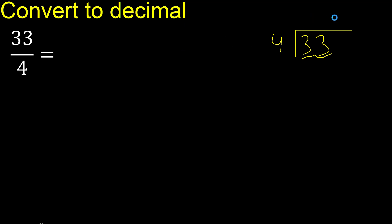4 multiplied by 8 is 32. 32 is not greater than 33, so we use 8. 33 minus 32 is 1.